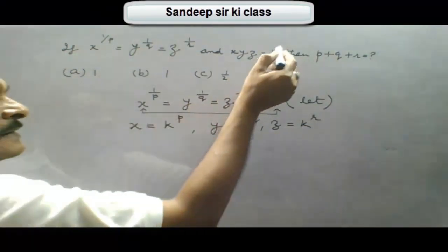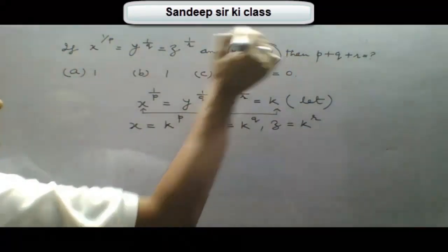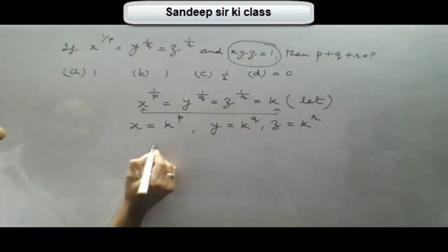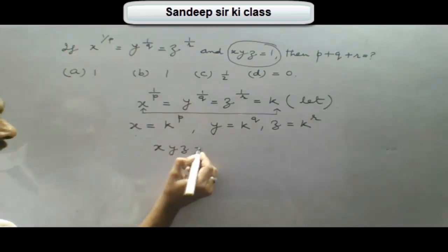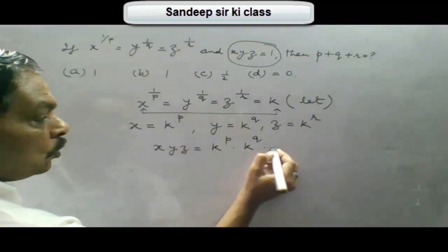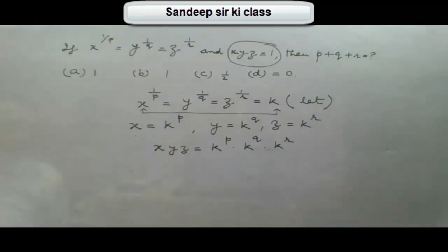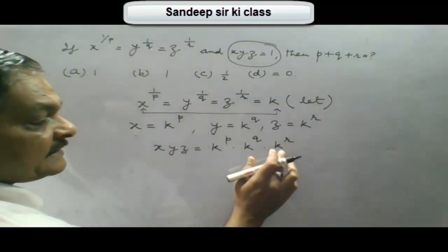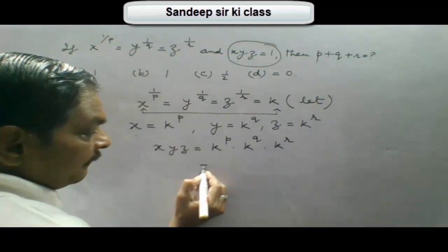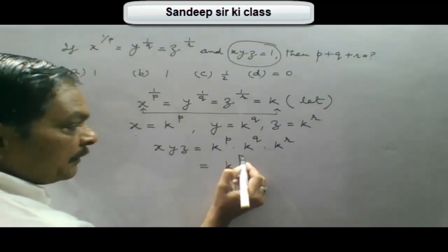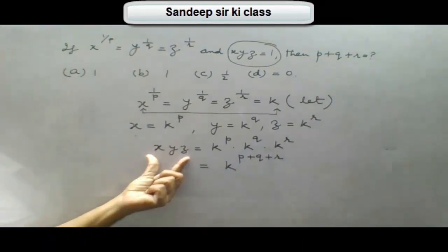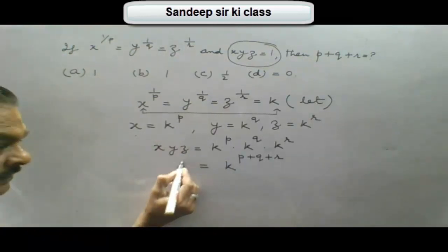Now we have the second condition that xyz equals 1. If we multiply these three equations, we get xyz on the left-hand side, and on the right-hand side we get k to the power p into k to the power q into k to the power r. Since the base is the same, the powers are added, giving k to the power p plus q plus r. We are given that xyz equals 1.